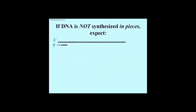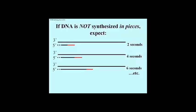Here's what one might expect in this experiment if both strands were somehow synthesized continuously and not in fragments. After 2 seconds, only short lengths of DNA would have replicated, and the added radioactive nucleotides would be incorporated at the ends of these fragments, shown in red. After 4 seconds of replication, the replicated DNA would be longer, and the radioactive bits would be added to these longer pieces. After longer and longer times of phage infection, the labeled radioactive nucleotides would be added to longer and longer lengths of replicated DNA.